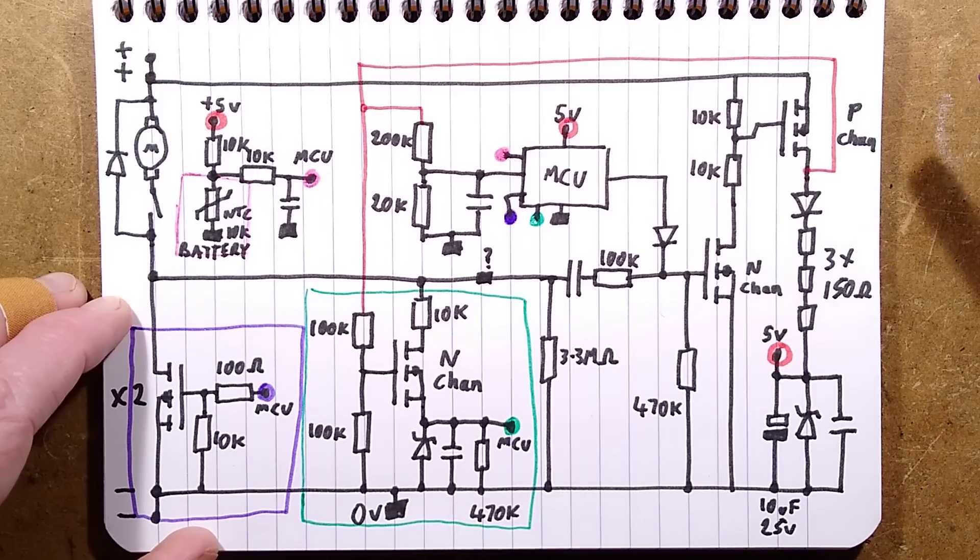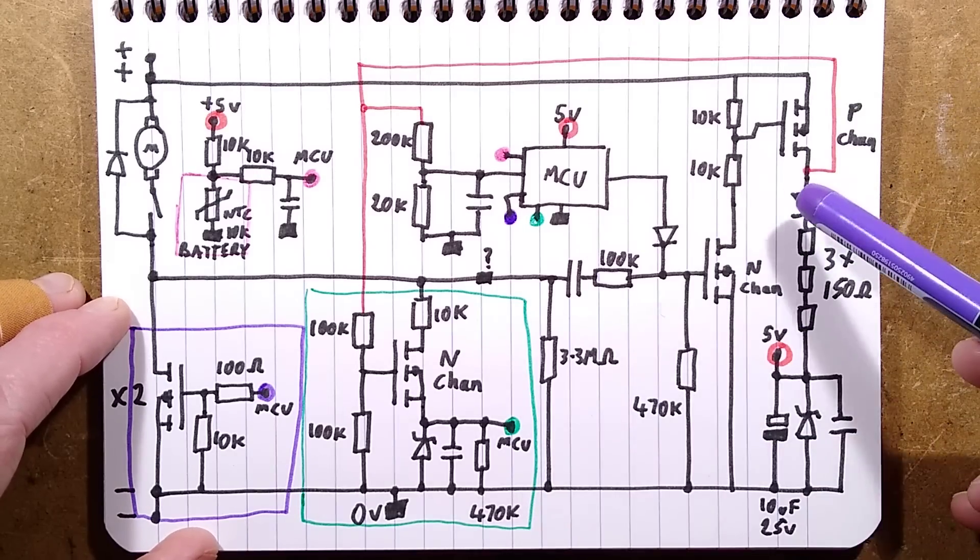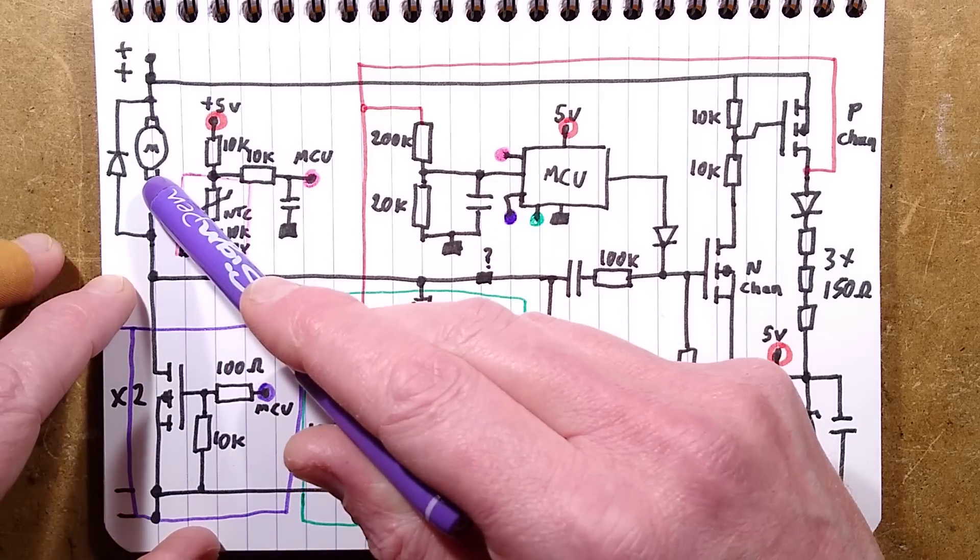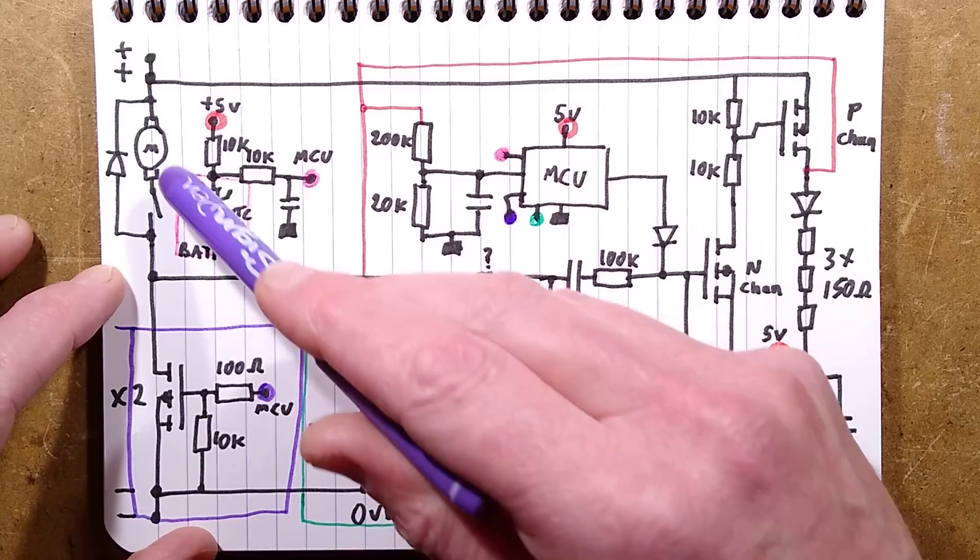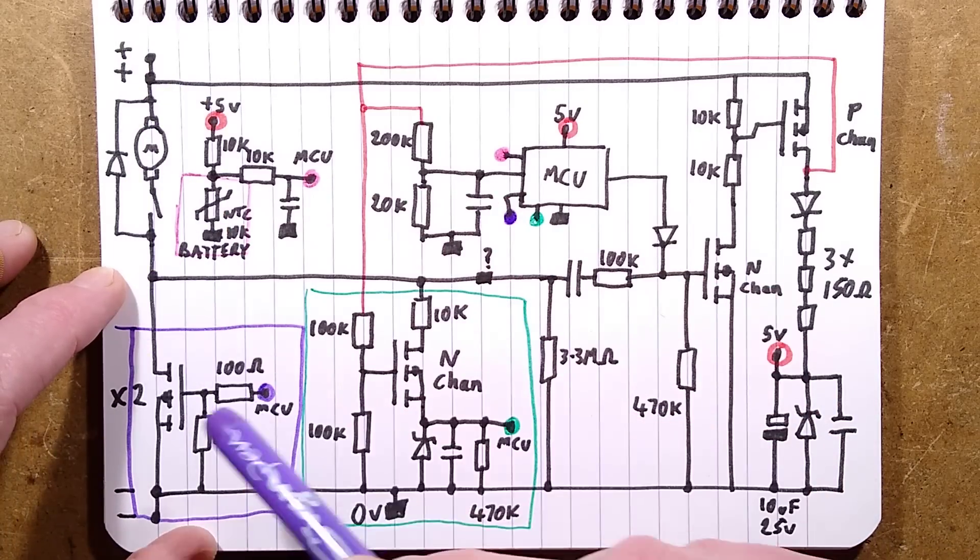As soon as you turn it on, it's going to start passing current and that's what this unit detects. Initially, when you pull the trigger on the tool, it connects the positive rail.